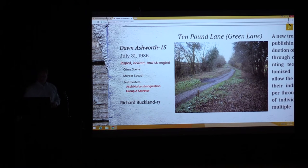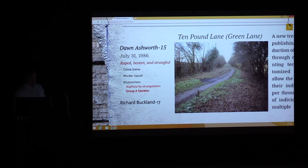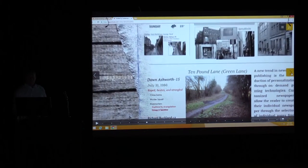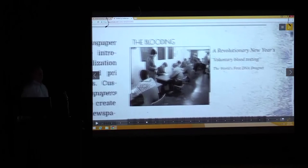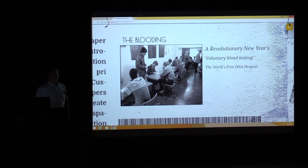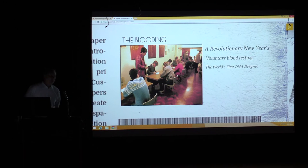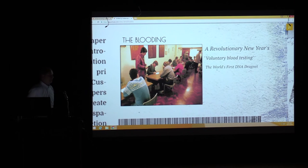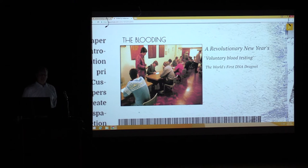What happened next was another revolutionary thing in policing — what we call 'the blooding': a voluntary blood testing of all males in the three villages. It started with males aged 13 to 34. The reason for that age range? The semen count was very high in the samples from each victim, and that age group probably has the highest semen count.